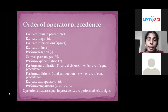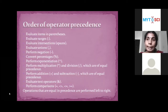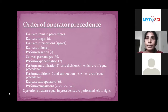The order of operations in Excel is: first evaluate items in parentheses, then evaluate ranges, then intersections, unions, perform negation, convert percentages, perform exponentiation, then multiplication and division, then addition and subtraction, evaluate text operators, and finally perform comparisons. So in a formula, if we want to do addition first, we must place that addition operation inside parentheses, otherwise Excel will calculate multiplication before addition.